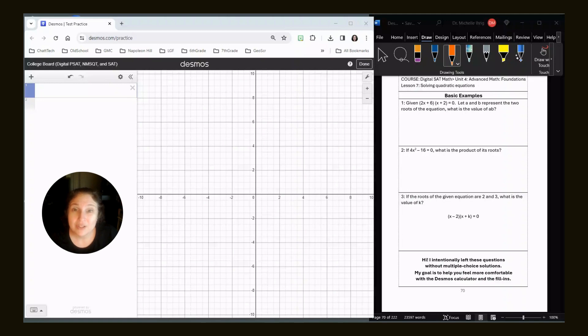Right now, we are doing unit four, lesson seven, solving quadratic equations from Khan Academy. If you have my book, we are on page 70. If you don't have my book, okay, get paper and pencil or whatever device that you use.